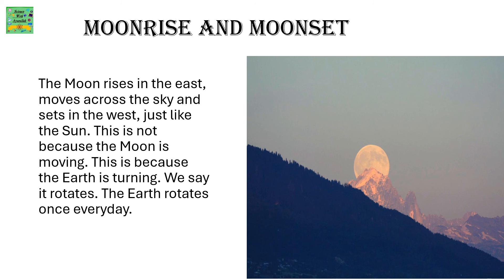Moon Rise and Moon Set. The moon rises in the East, moves across the sky and sets in the West, just like the Sun. This is not because the moon is moving. This is because the Earth is turning. We say it rotates. The Earth rotates once every day.